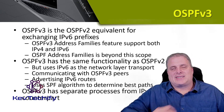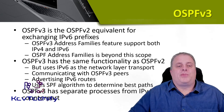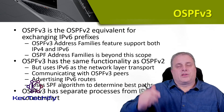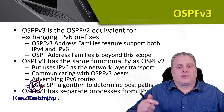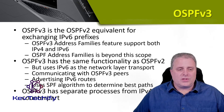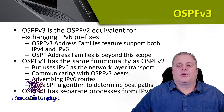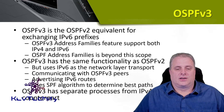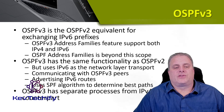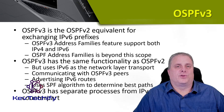OSPF version 3 has the same functionality as OSPF version 2 but uses IP version 6. It communicates with OSPF version 3 peers, advertises IP version 6 routes, and uses the Dijkstra shortest path first algorithm to determine the best paths. OSPF version 3 is a separate process from its OSPF version 2 IP version 4 counterpart.